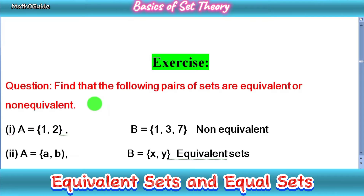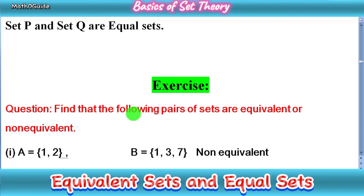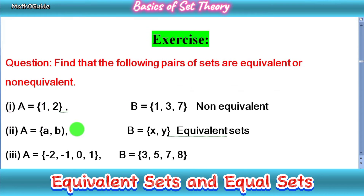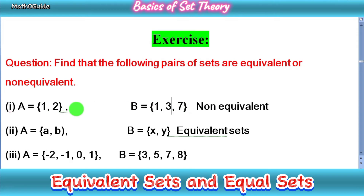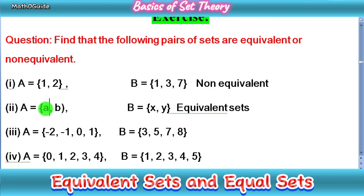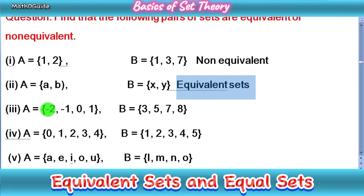Now let's move to an exercise. The question is: find which of the following pairs of sets are equivalent or non-equivalent. In part one, set A has two elements and set B has three elements — different number of elements, so these are non-equivalent sets. In part two, set A has {a, b} and set B has {x, y} — both have two elements, so A and B are equivalent sets.